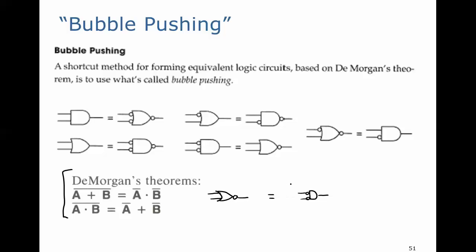We're taking A and B, and we're going to invert them, and then we're going to apply them to the AND gate.